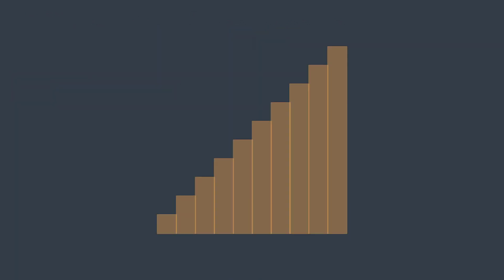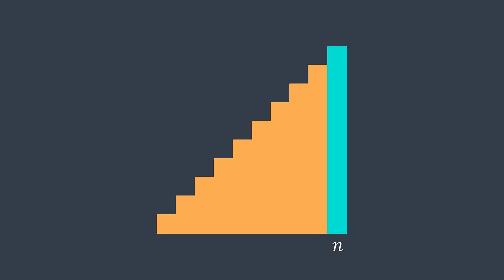Let's suppose that you have a staircase with n steps, and you want to know the number of ways to reach the nth step — the last one — knowing that you can only jump by one, two, or three steps.